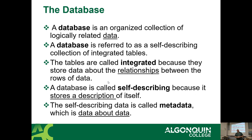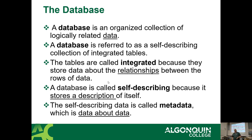A database is an organized collection of logically related data. That's actually a pretty dense sentence. Essentially it means we collect information that is related to itself and try to organize it, and this information, once organized, becomes data. Unorganized data is basically raw information. A database is also referred to as a self-describing collection of integrated tables. In other words, you define a structure, the data goes into it, and the structure describes itself.